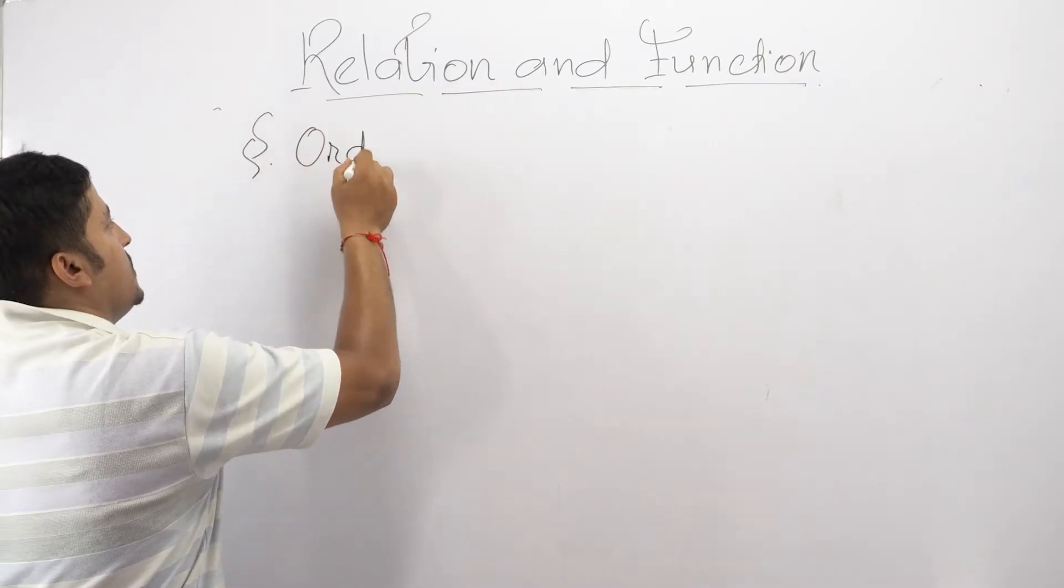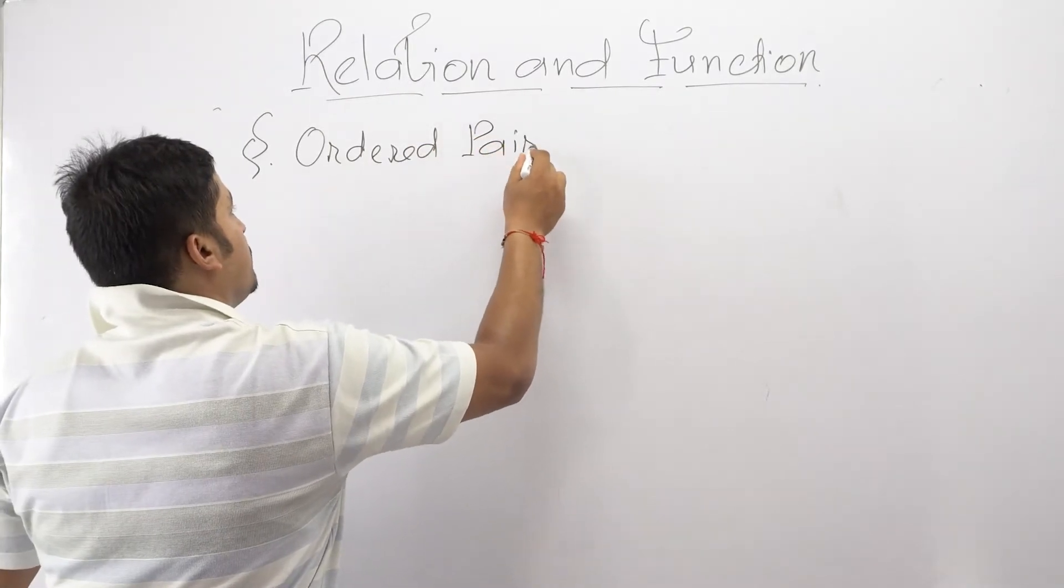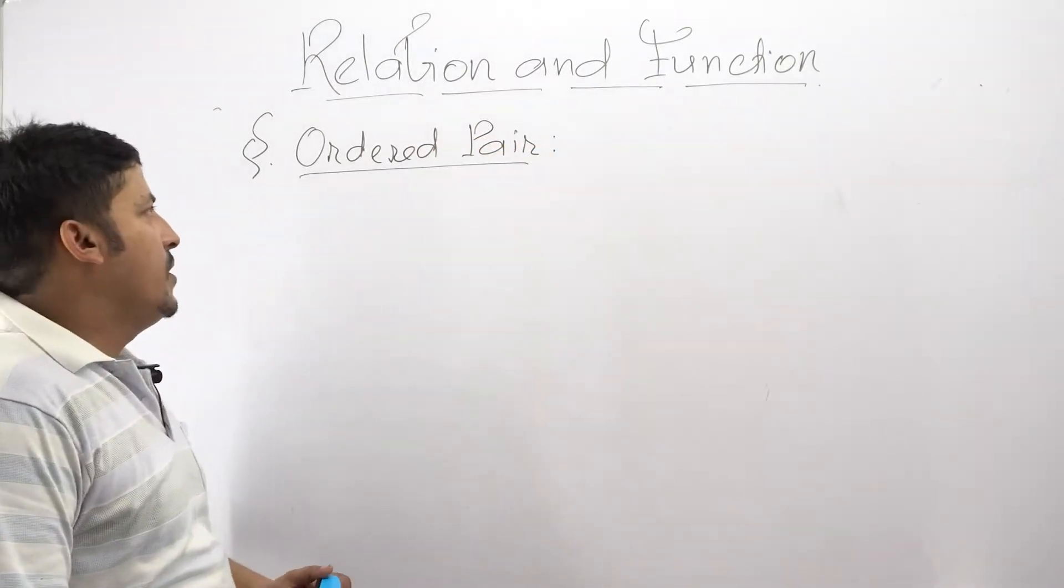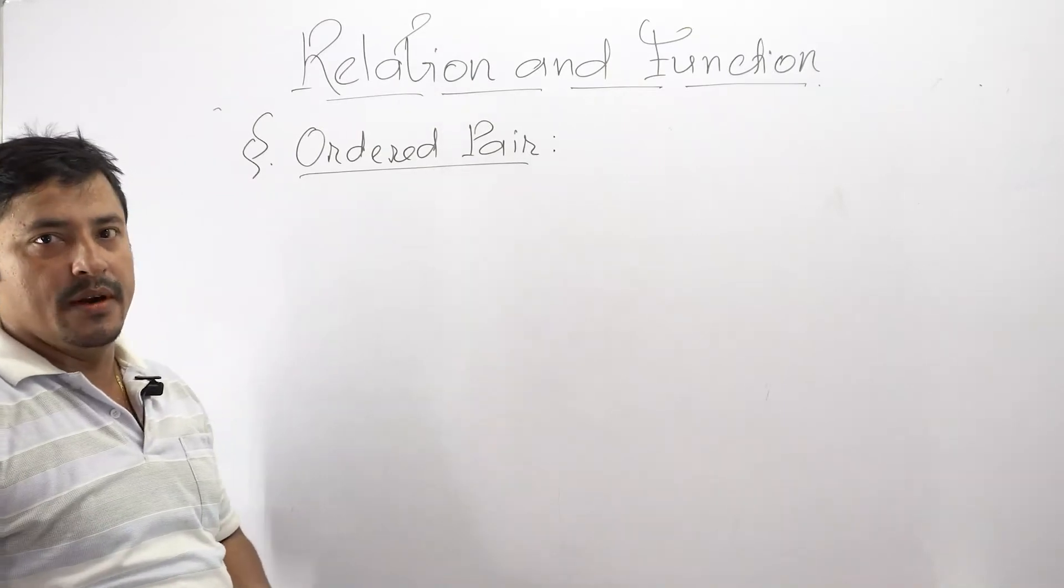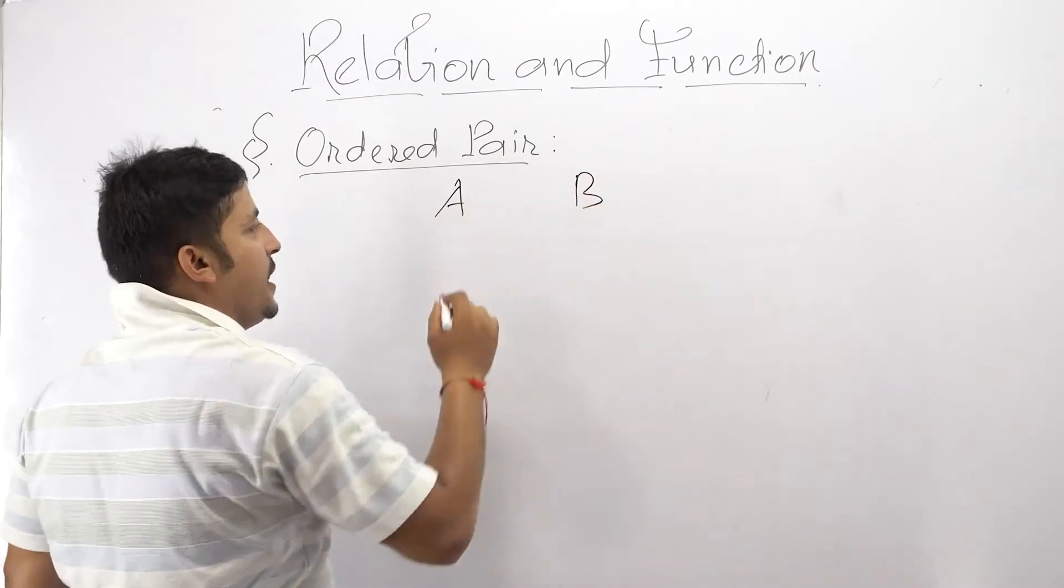First one is ordered pair. So what will we have in ordered pair? For ordered pair let us consider two non-empty sets A and B.